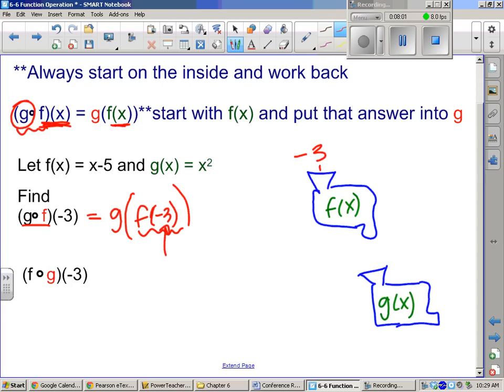So look back to the equation that we had. If we plug in a negative 3 and subtract 5, what do we get? Negative 8. That is the output from this machine. Alright. That becomes the input into the g machine.